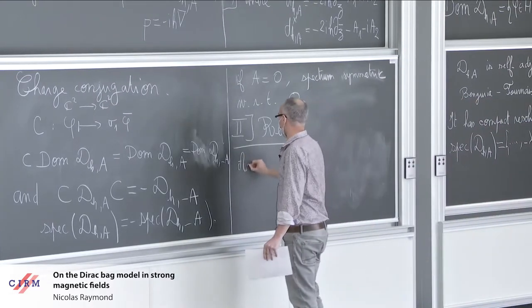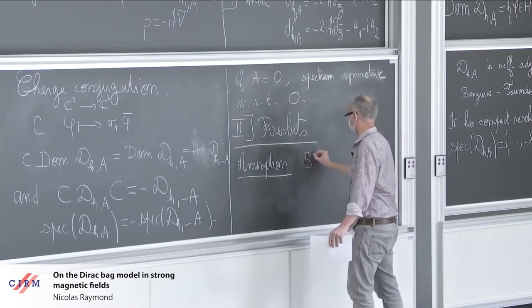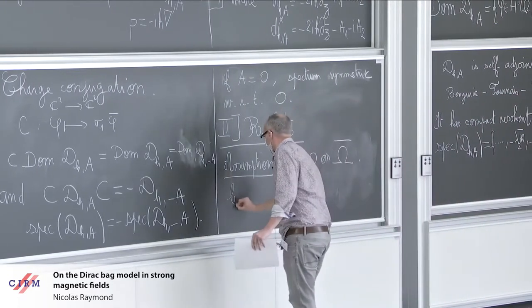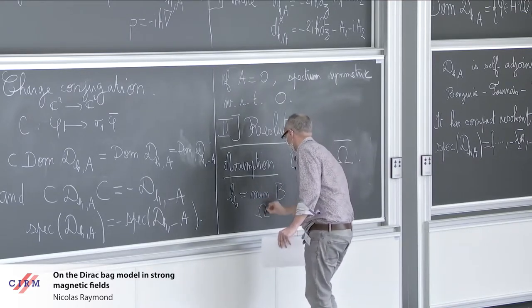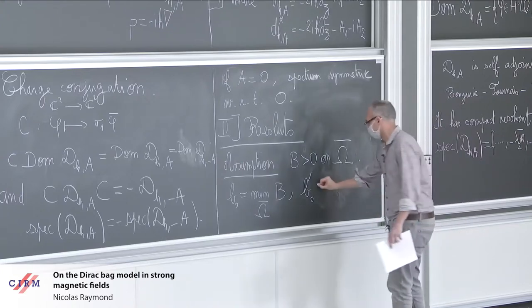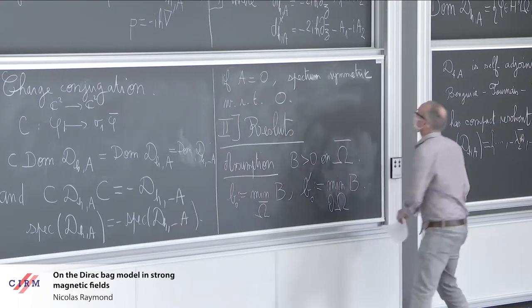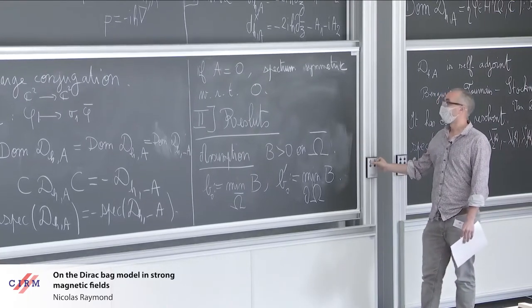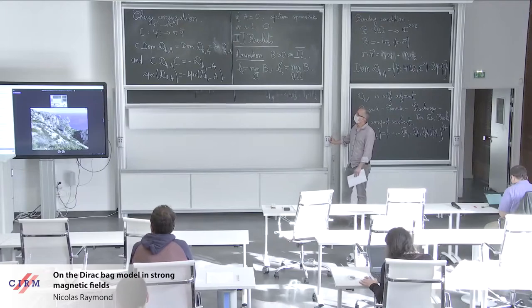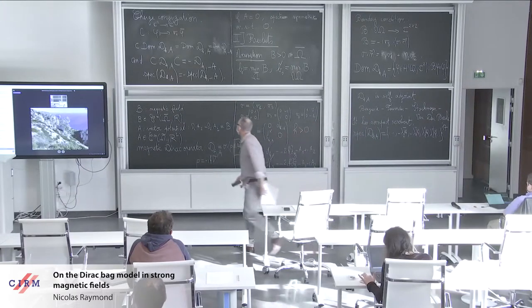Of course, when A is zero, this shows that the spectrum is symmetric with respect to zero. But when A is not zero, in general, it's not the case. And we will see that in the main theorems. There will be a general assumption that the magnetic field is positive. In the whole talk, B is positive up to the boundary. I will denote by b₀ the minimum of b on omega bar. And at some point in the talk, I will need also the minimum of b, b₀ prime on the boundary.